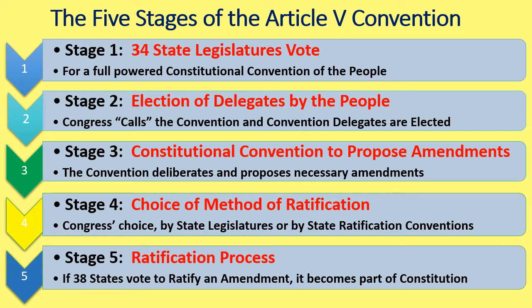Stage two is the election of delegates by the people. Congress calls the convention and then the convention delegates are elected. Congress's call is a ministerial duty — no power attaches to it. They have no rule-making power over the convention.